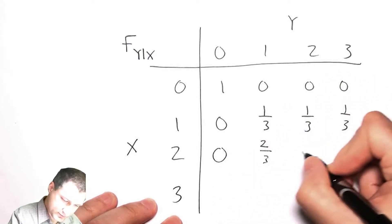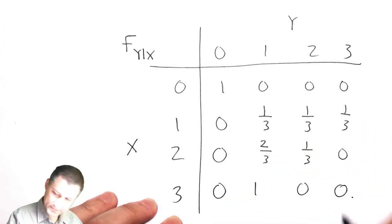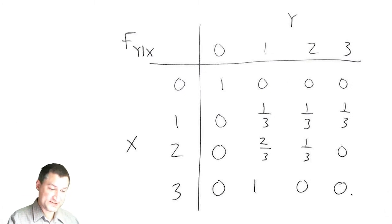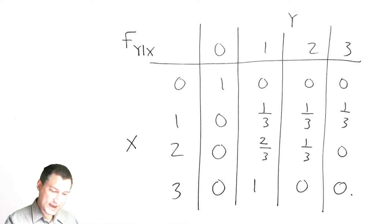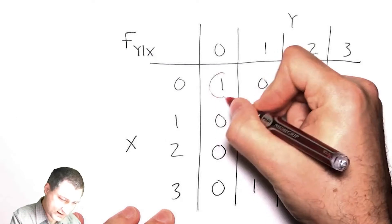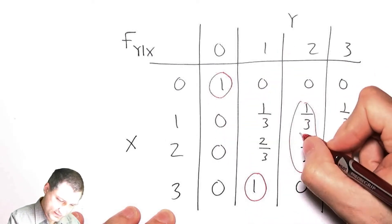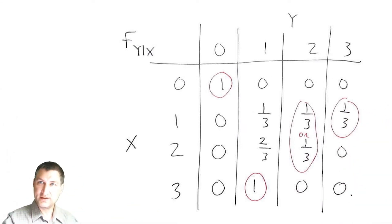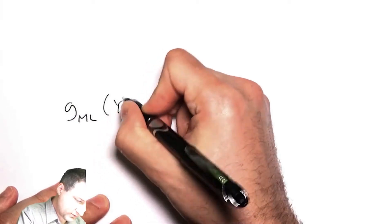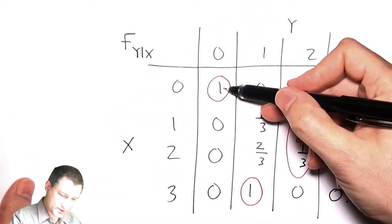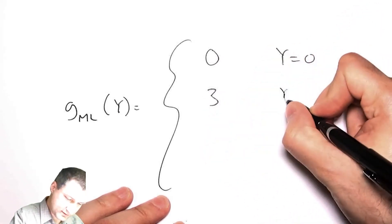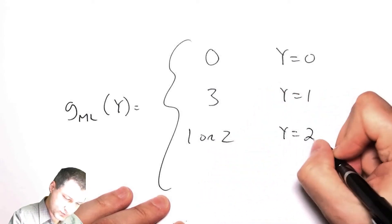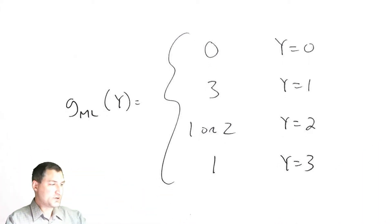So normalizing each row: the first row is one zero zero zero, the next row is zero one-third one-third one-third, and so on. Now maximum likelihood is saying I tell you y, so we're back in the world of fixing a value of y (a column) and finding the x that produces the largest value in that column. So the ML estimate is zero if y equals zero, three if y equals one, flip a coin between one or two if y equals two, and one if y equals three.